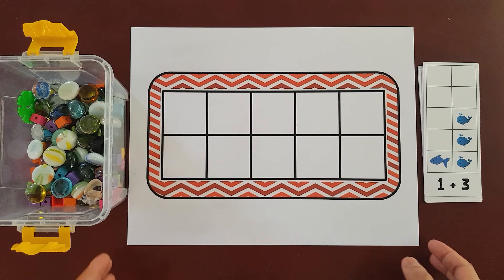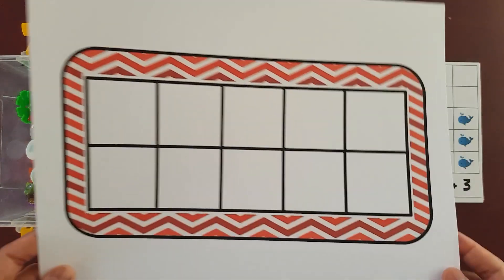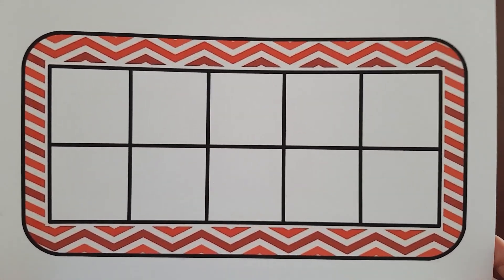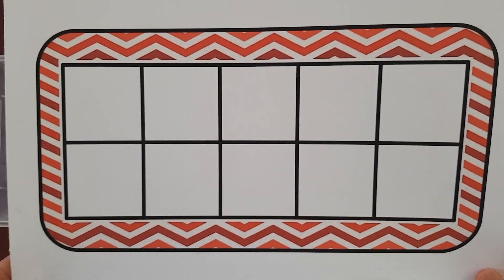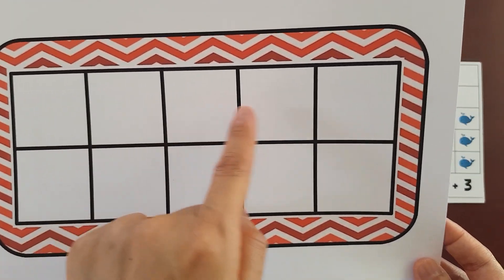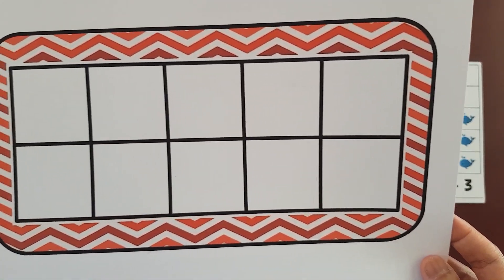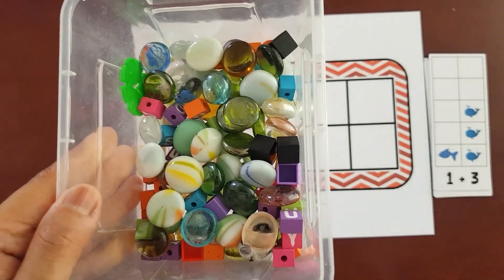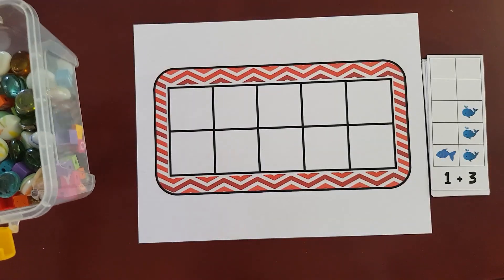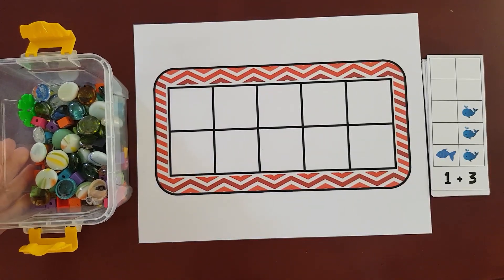This activity uses these 10 frames. The 10 frames is a tool used to develop number sense in children. So basically, it's just a rectangle with 10 frames, 5 on top and 5 on the bottom. Again, we will use math manipulatives or counters to represent numbers less than or equal to 10 on the frame. They provide kids with a visual of numbers. So it's not just memorization or counting without meaning, but it shows the kids the value of numbers.